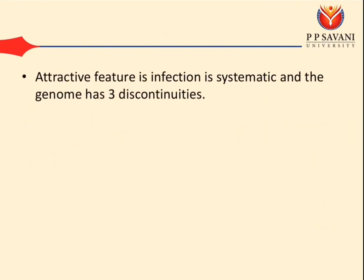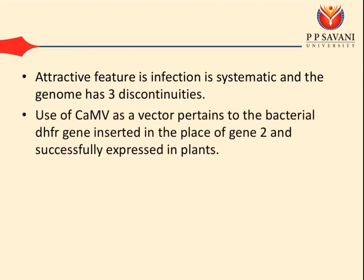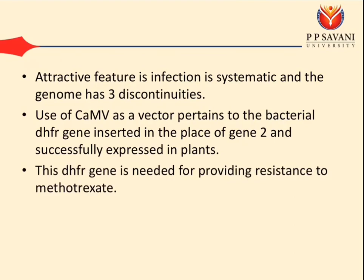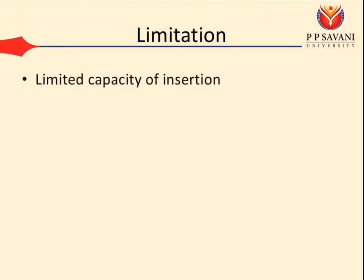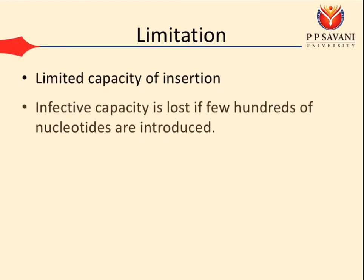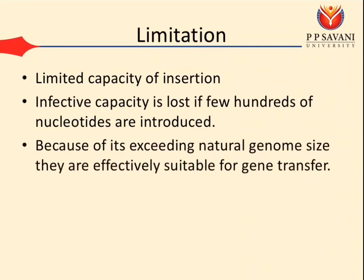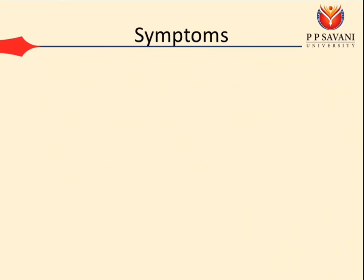An attractive feature is that infection is systemic and the genome has three discontinuities. Use of CaMV as a vector pertains to the bacterial DHFR gene inserted in place of gene 2 and successfully expressed in plants. This DHFR gene provides resistance to methotrexate. A key limitation is the limited capacity for insertion — infective capacity is lost if even a few hundred nucleotides are introduced, because exceeding the natural genome size renders them ineffective for gene transfer.